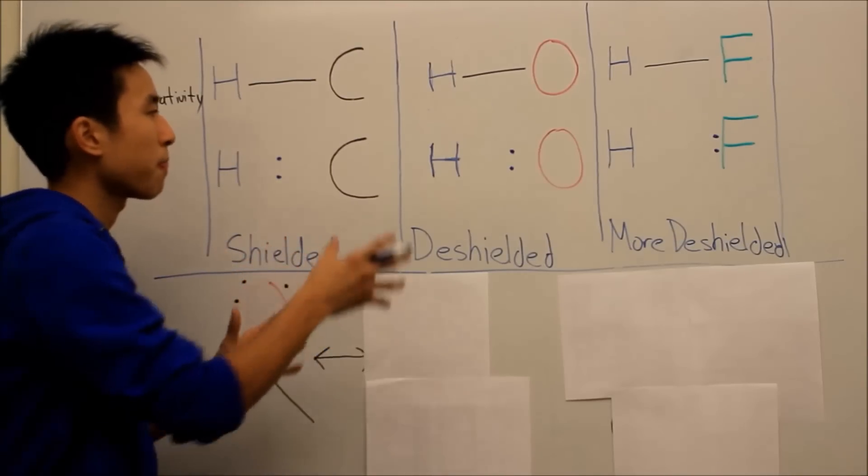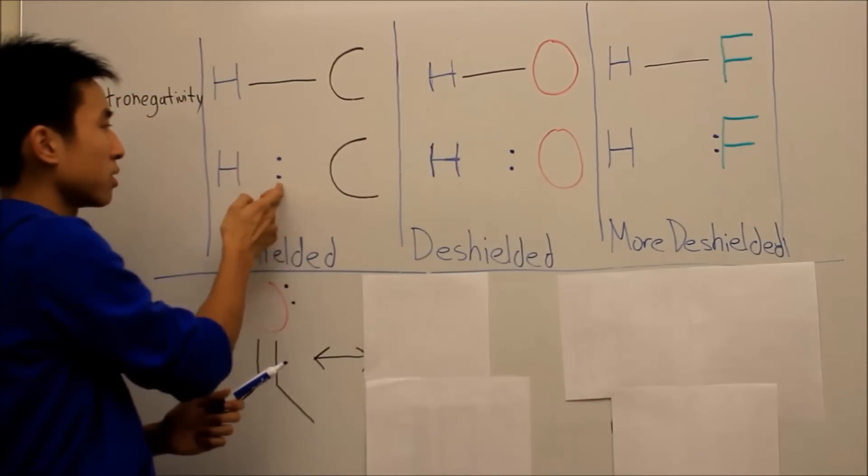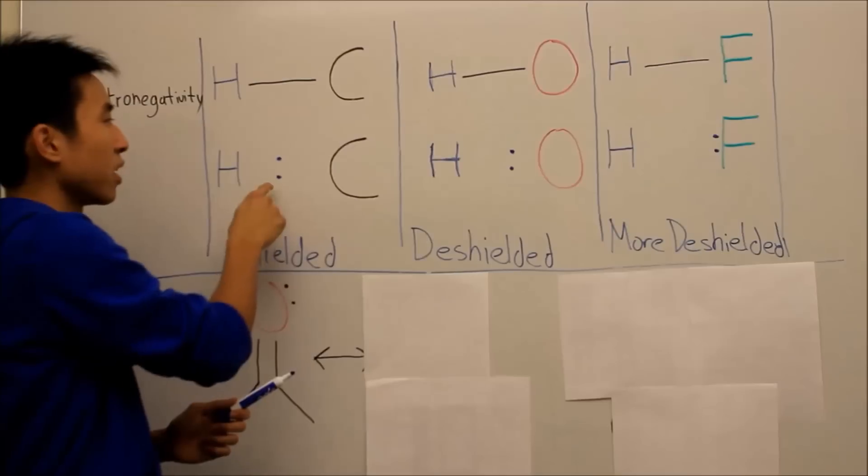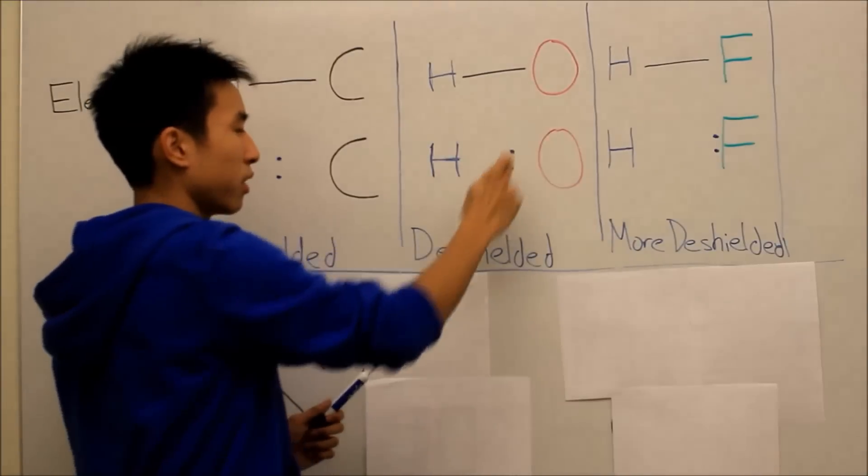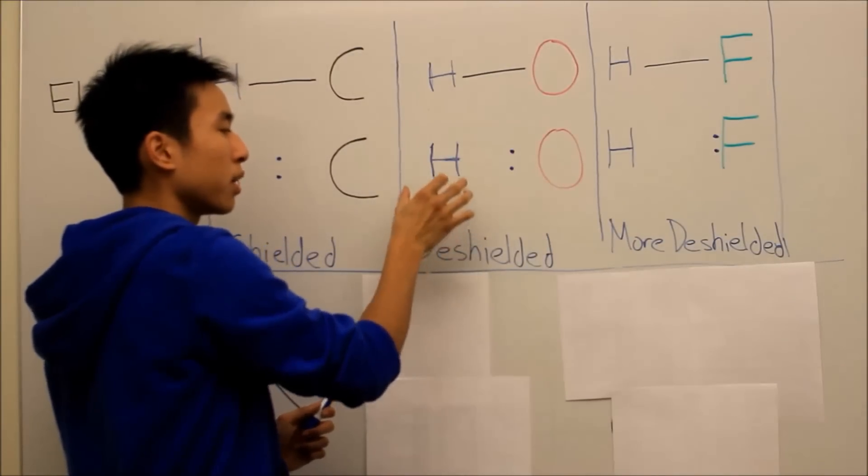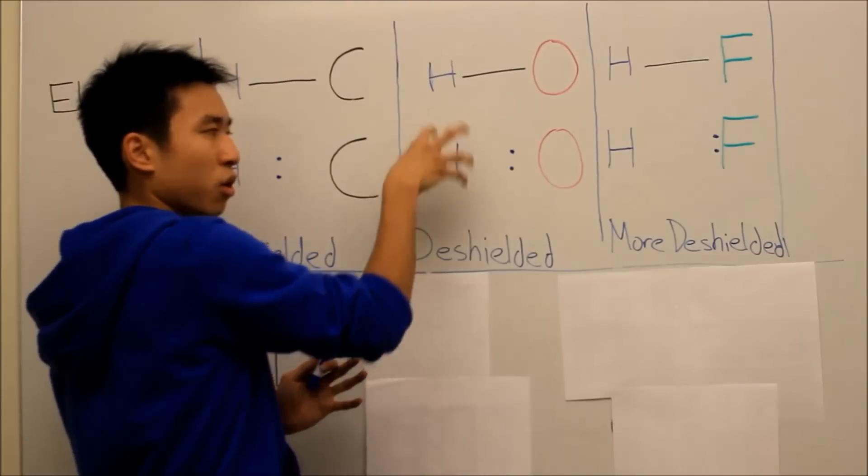And then basically the hydrogen here will be more shielded, obviously, because the electrons are closer to it. And then for the hydrogen-oxygen bond, the electrons are farther away. So we call this hydrogen deshielded because less electrons are forming that orb around it.